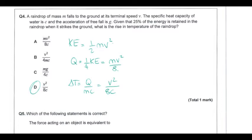A raindrop falls to the ground at terminal speed v, with specific heat capacity c and acceleration g. We're told 25% of the energy stays within the raindrop and 75% is lost to surroundings. The energy the raindrop has just before hitting the ground is transferred to thermal energy, but only 25% stays in the drop — hence the factor of one quarter. Mass cancels, giving a temperature change with c on the denominator, which is answer D.